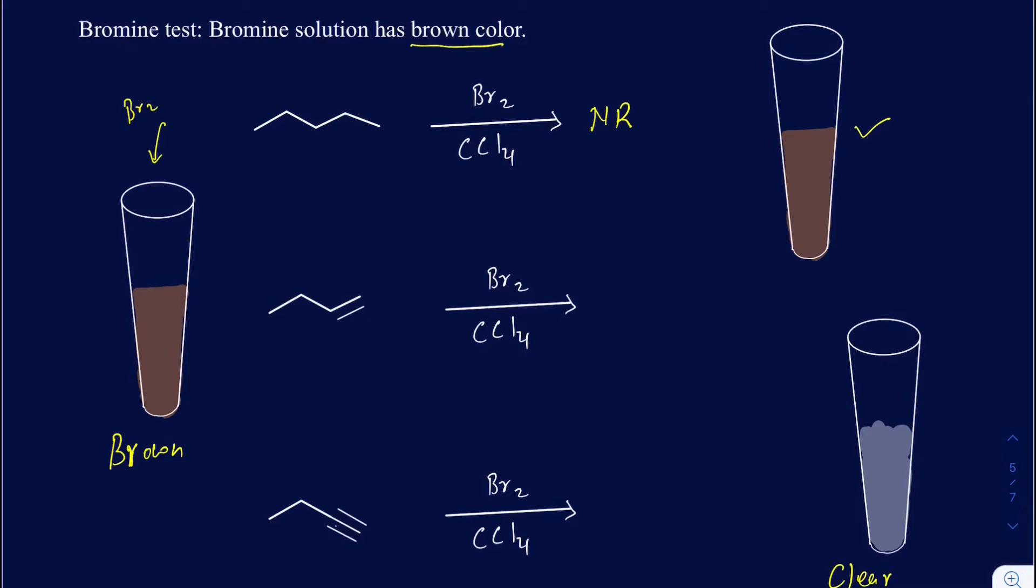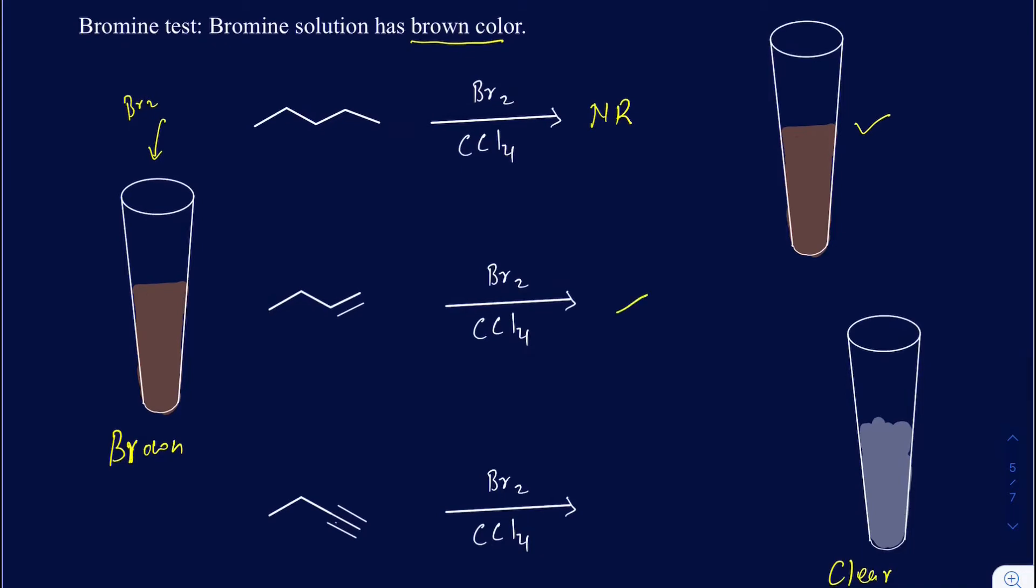What really happens when you have the bromines added to the alkenes and alkynes? You go into an addition reaction where, in case of alkene, you get a vicinal dihalide. So you got a bromine here and you'll have a bromine here.